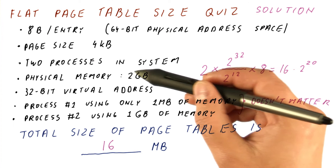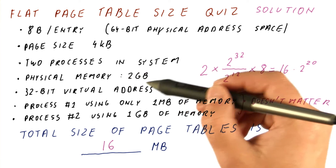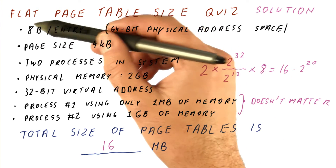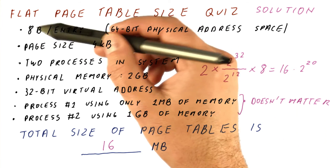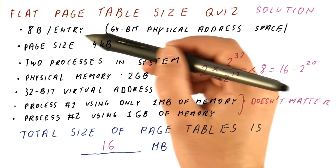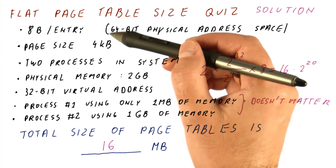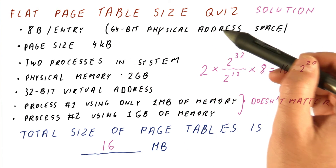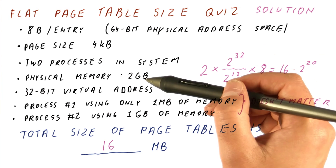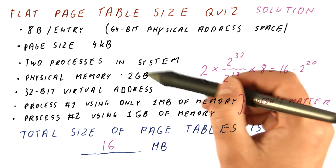Also, it doesn't matter how much physical memory we actually have. What matters is the size of the entry. For example, this entry was designed to accommodate up to a 64-bit physical address, even though the system actually has much less memory.